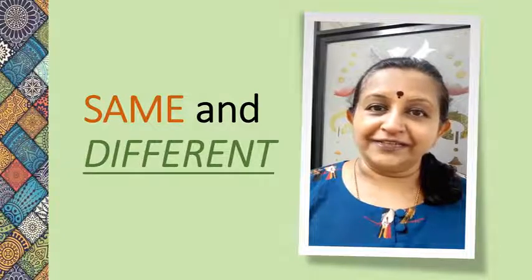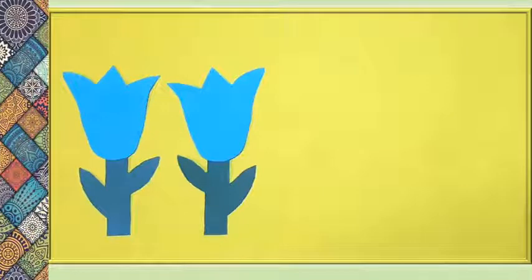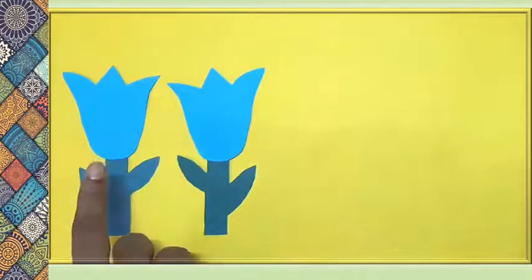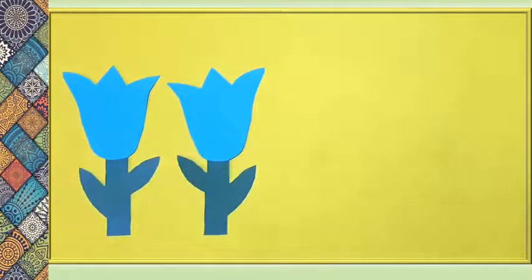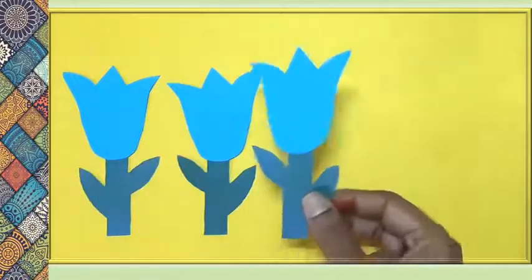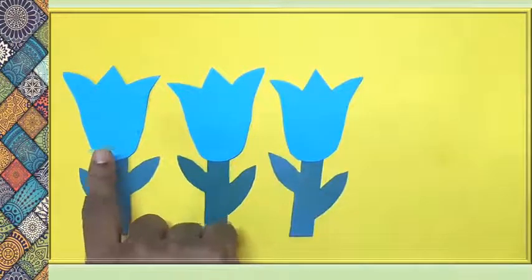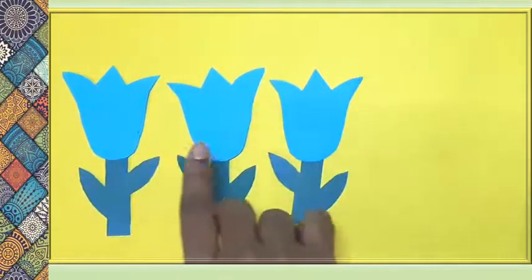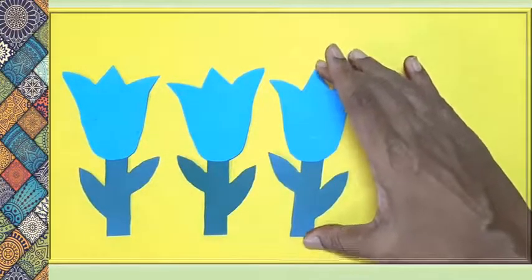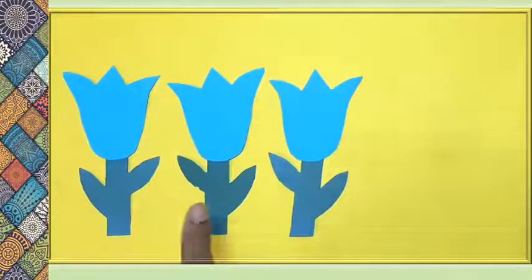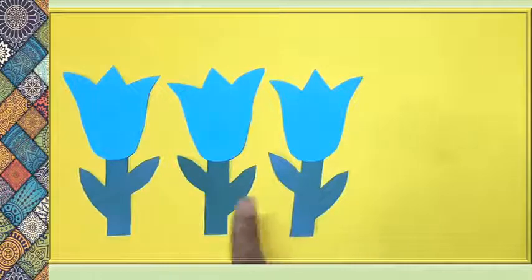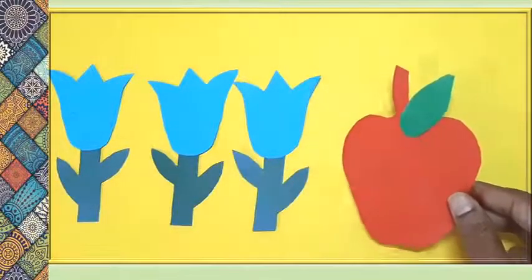Let's take a look at these examples. I have some flower cutouts here — one blue flower cutout, another blue flower cutout. I'm going to place this cutout here: one blue flower, another blue flower, one more blue flower. All these flowers are of one color and one size, so we will say they are the same set of blue flowers.